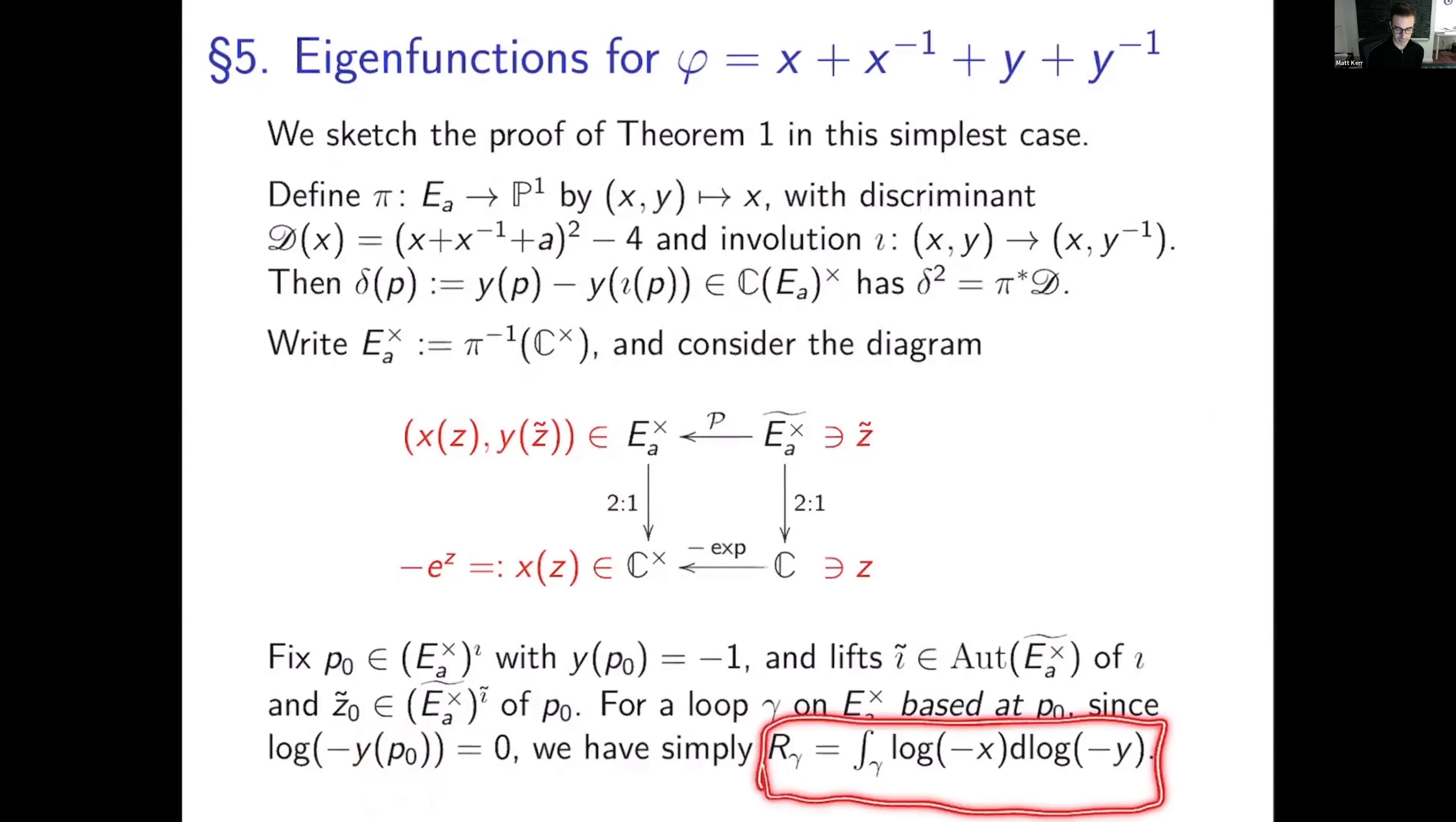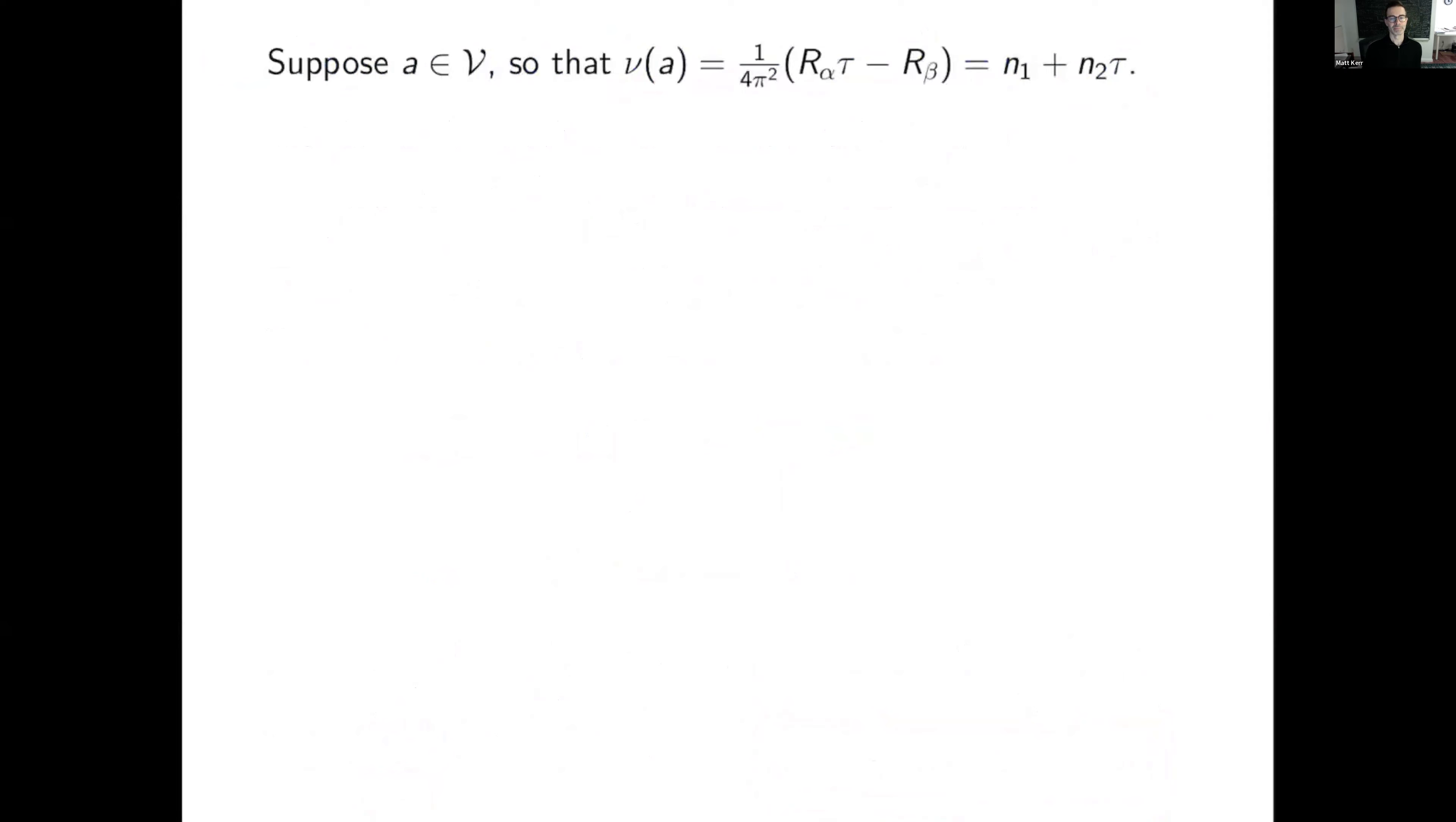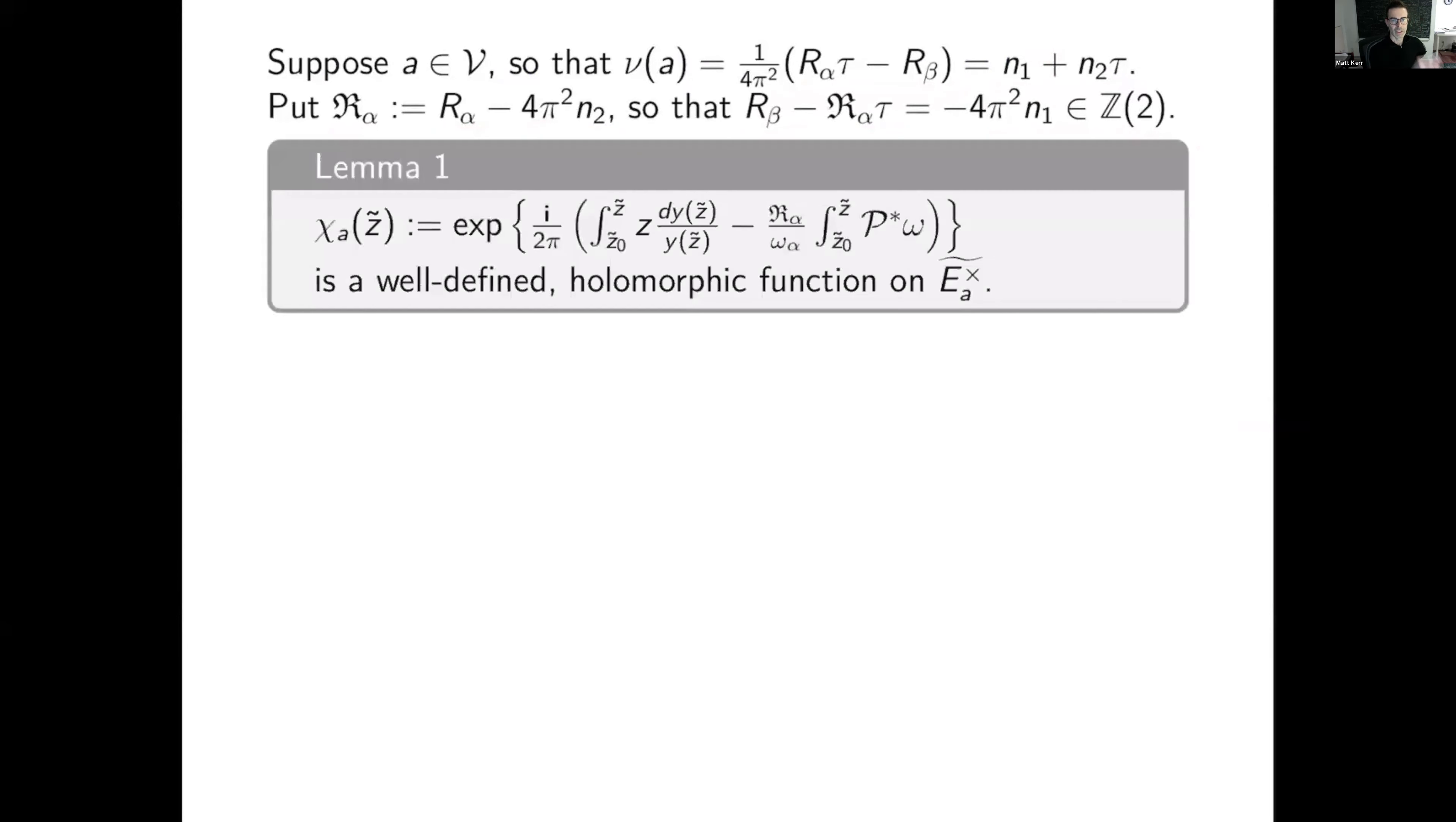All right, now suppose I have an attractor point in moduli, and I consider the value of the higher normal function at that point. We know, number one, it's always given by this, but at an attractor point, it's an integer combination of one and tau. So n1 and n2 are integers. And I write down this funky r alpha as r alpha minus 4 pi squared n2, a little correction, so that we get r beta minus r alpha tau is 2 pi i squared times an integer. And now we have this first lemma, and this is really the key in the construction of the eigenfunctions. You write down this chi a of z tilde, which is the exponential of the following big integral.